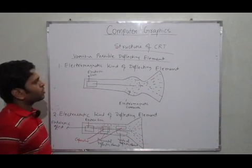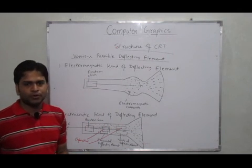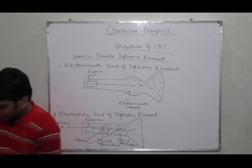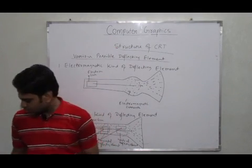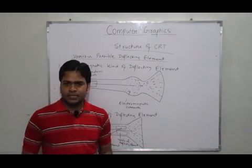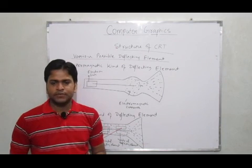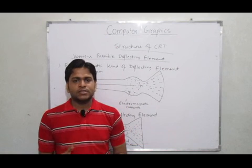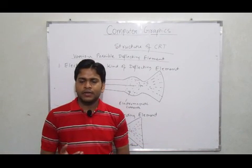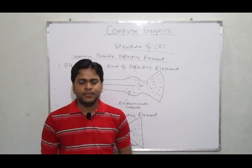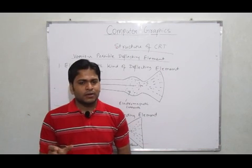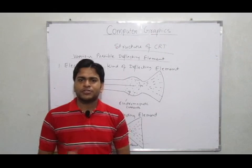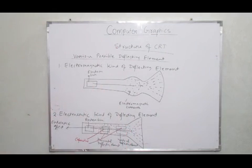These two important structures are very important from the examination point of view. This is all about the structure of CRT. We will move to the other segments of the CRT display devices in detail. The topics we have to consider in our coming lectures are a detailed discussion on the DVST, random and calligraphic display devices, and refresh and raster display devices. Thank you.